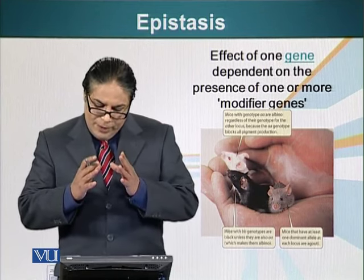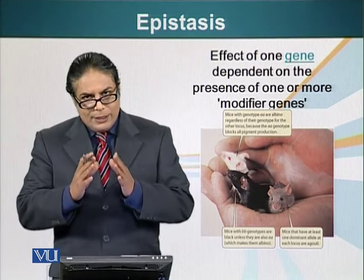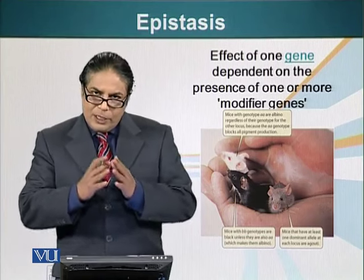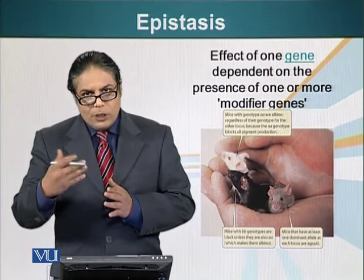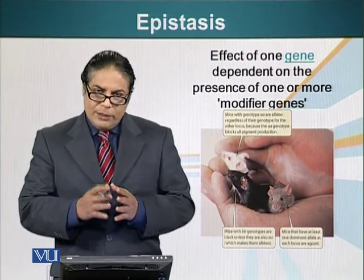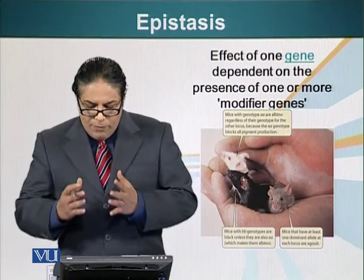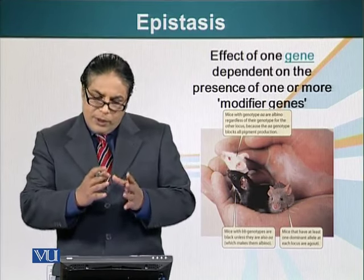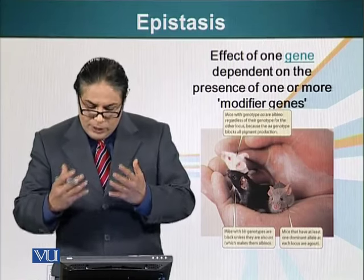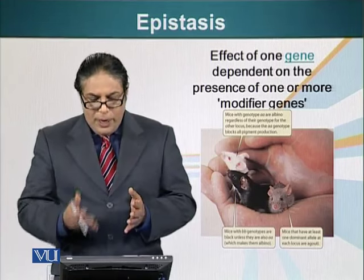Let's call that the A gene. If capital A — the dominant form of the gene — is present, meaning either two capital A's or capital A small a, then the mice will be able to produce color in their coat. However, if the A gene is recessive homozygous — that is, small a small a — the mice will not be able to produce any color at all. So the ability of mice to produce color is not just dependent on the color gene itself; it is also dependent on the gene that allows these mice to produce color in the first place. This phenomenon is called epistasis.